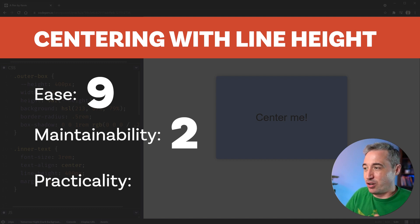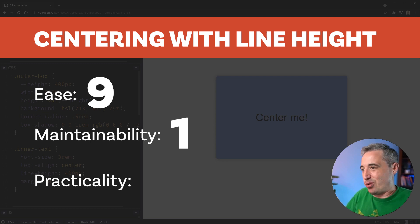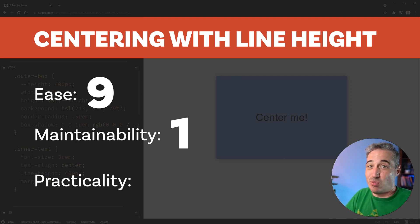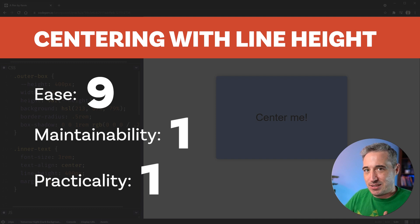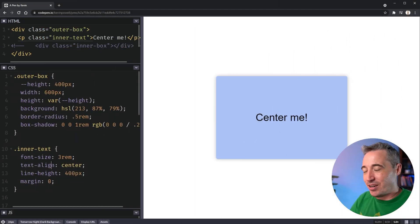As far as ease goes, I'd give it an eight or nine — it's super easy to do once you know the trick. But for maintenance, it's a two, because if someone who hasn't seen that trick comes across a line-height of 400 pixels, they're going to be confused, they'll change it, and it'll break. If the text gets a little bit longer and breaks onto multiple lines, the whole thing goes out the window — so maintenance drops to a one. Practicality is also a one or two; it's just too easy to break and there are so many better solutions.